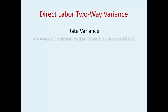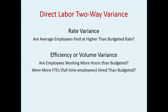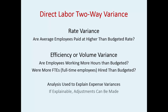Now, direct labor variance. This could happen if your average employees are paid higher than the budgeted rate. The efficiency or volume variance — maybe your employees worked more hours than budgeted, or more FTEs were hired than budgeted. That's what variance analysis is: you analyze the variances — why are you off budget? It could be favorable or unfavorable. The combination could end up being offset, resulting in a total unfavorable — those are the things you want to look for.